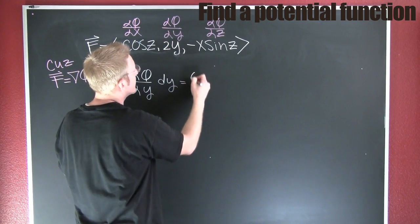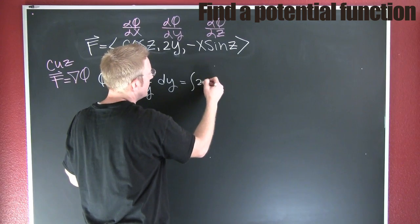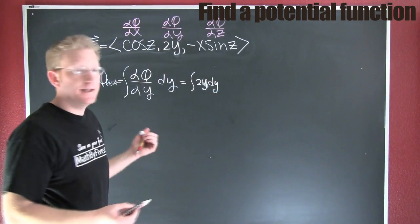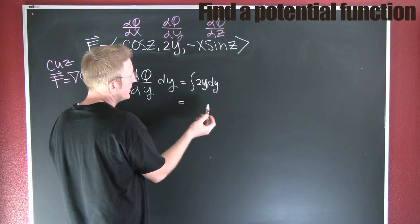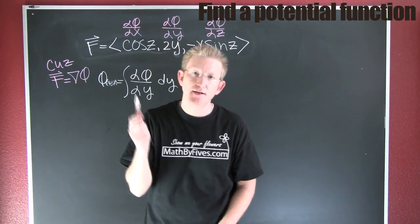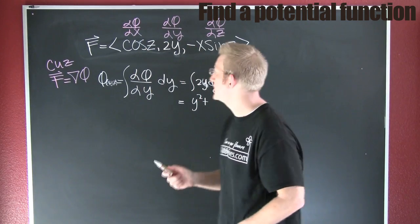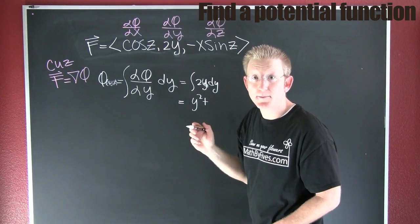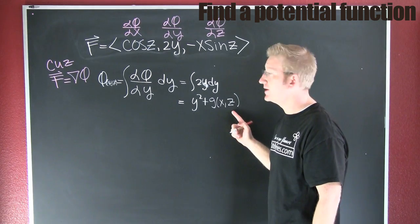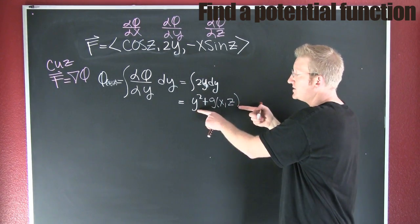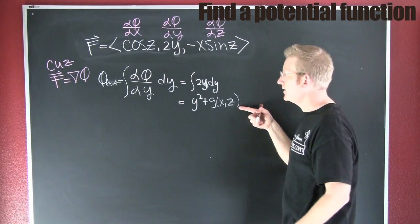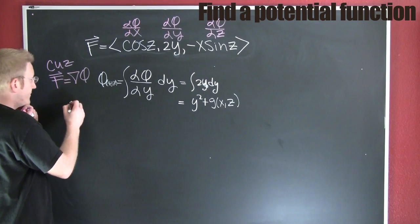So if I do this integration, I'm taking the integral of 2y dy. When I integrate that, I get y² plus a constant — but this isn't any old constant. It may have been a function of the other two variables x and z, so I add a function G(x, z). The reason is that if we integrated with respect to y and G only depends on x and z, it would be eliminated entirely when differentiated.